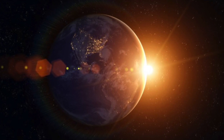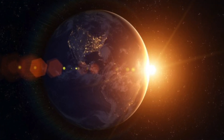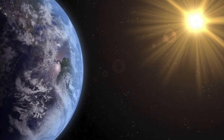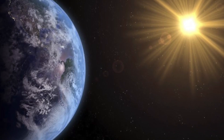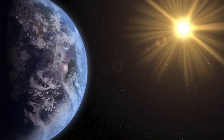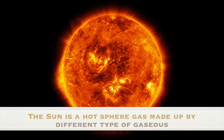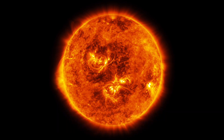The Sun is a hot sphere of gas with internal temperatures reaching over 20 million Kelvin due to a nuclear fusion process where hydrogen is fused to helium. The Sun is made up of different types of gases such as hydrogen, helium, nitrogen, and other gases.